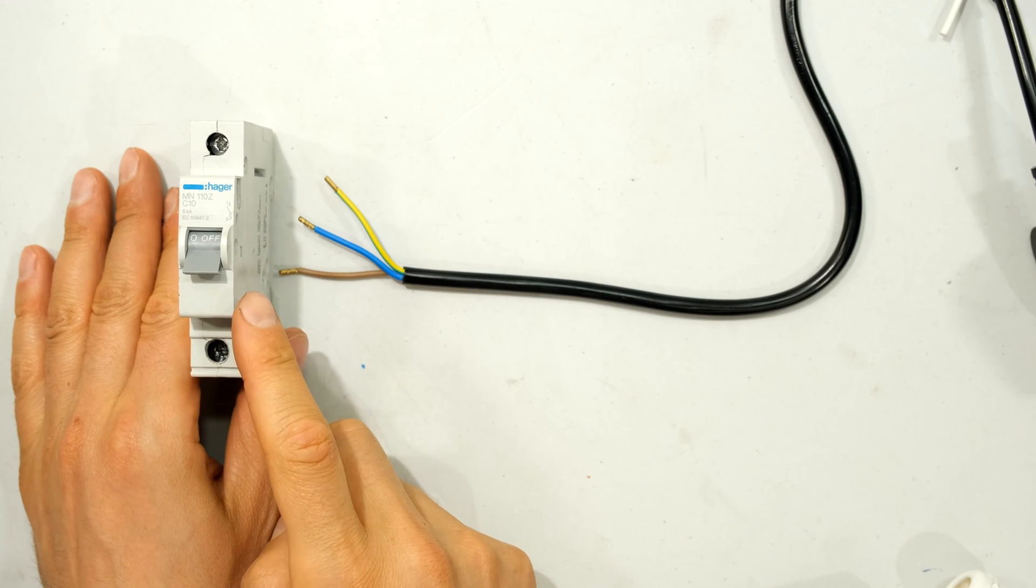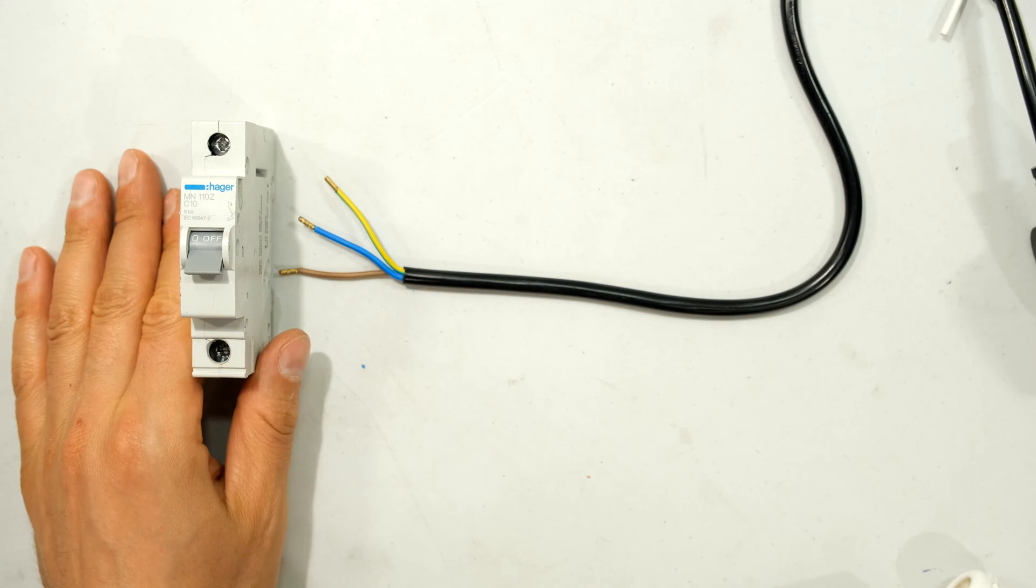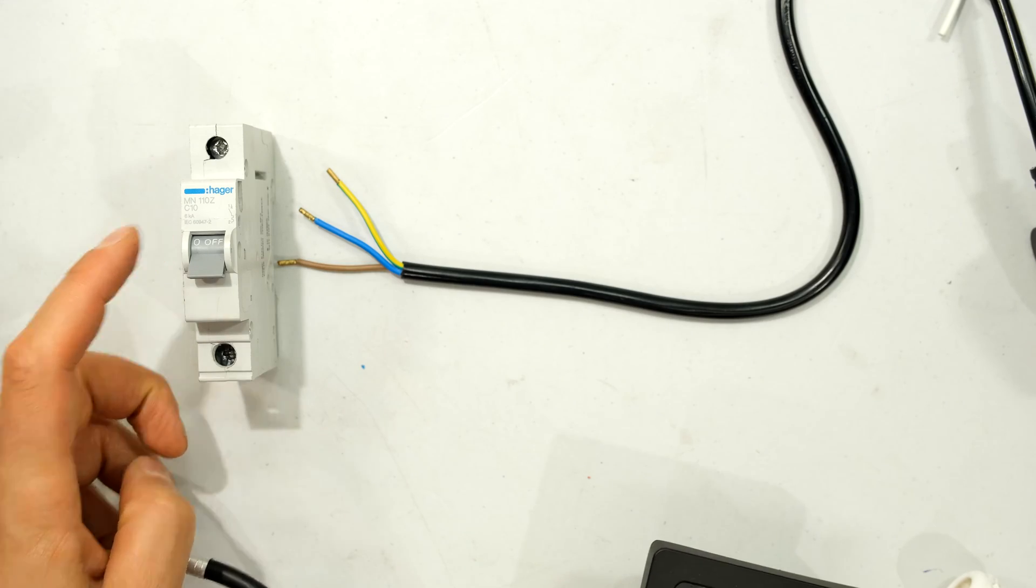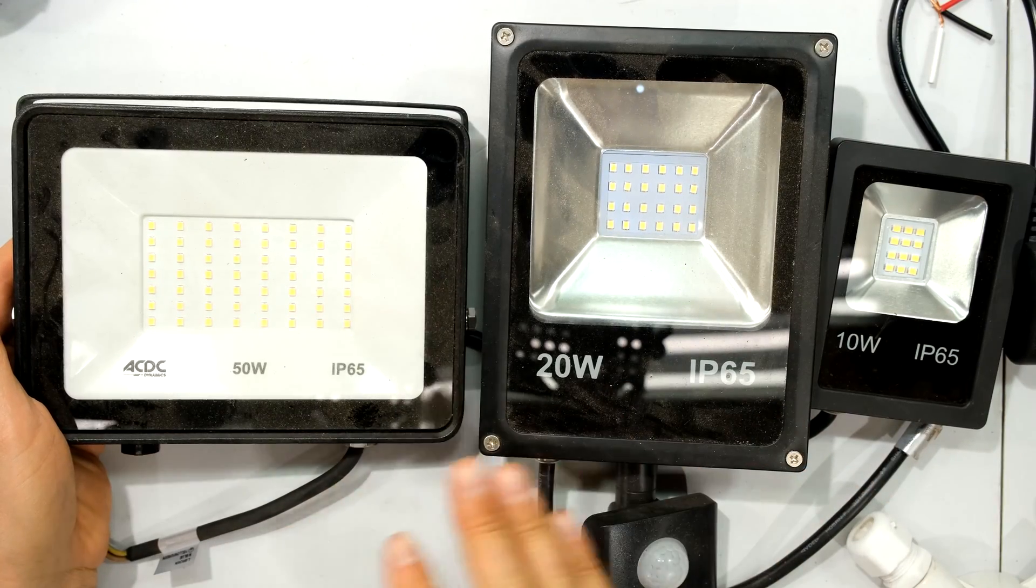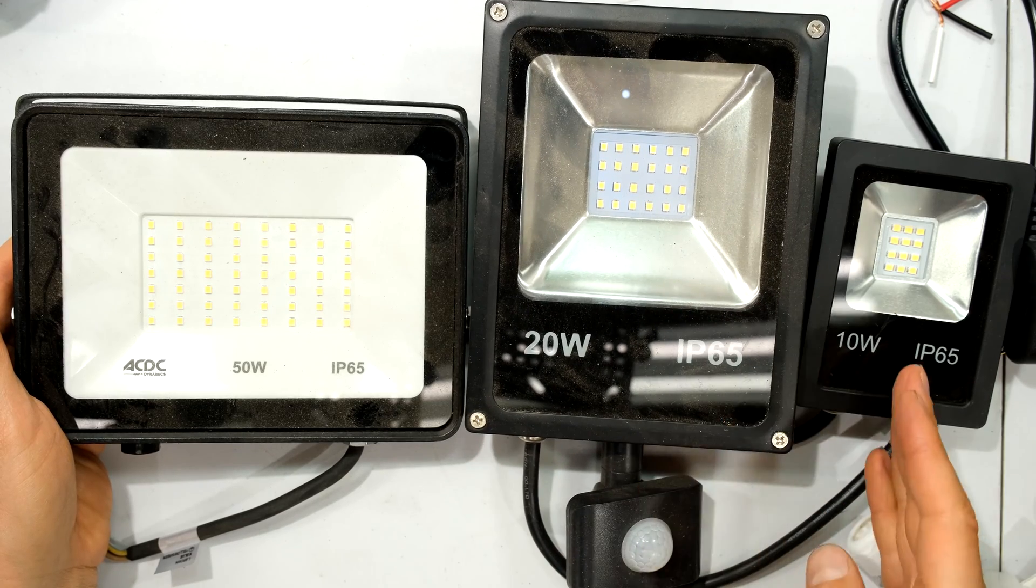Now in most circumstances, people will be wiring it from the circuit breaker. Just for explanation purposes, I have a 10A circuit breaker. Obviously there are different wattages for your flood lights. Here's a 10, a 20, a 50.